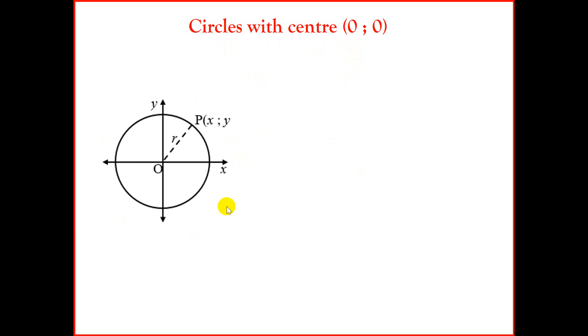If you look at our diagram, we have a random point P, so we're going to give it coordinates (x, y). The center is at the origin, which is (0, 0). So I want you to think about this. How would we find OP, which is the radius of the circle?